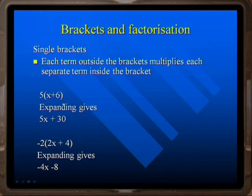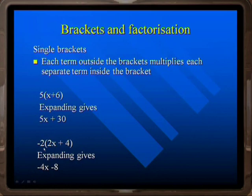We do 5 times x to give 5x, and 5 times 6 to get 30. Let's have a look at another example. Expanding this gives minus 4x minus 8, as we do minus 2 times 2x to give minus 4x, and minus 2 times 4 to give minus 8.